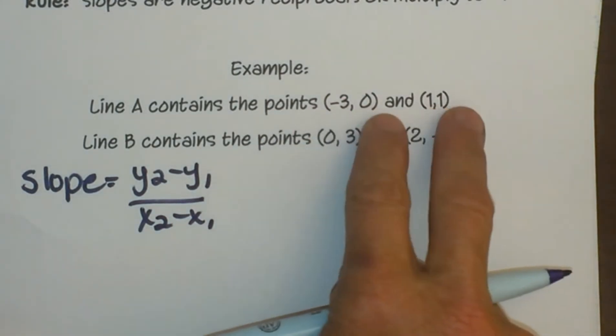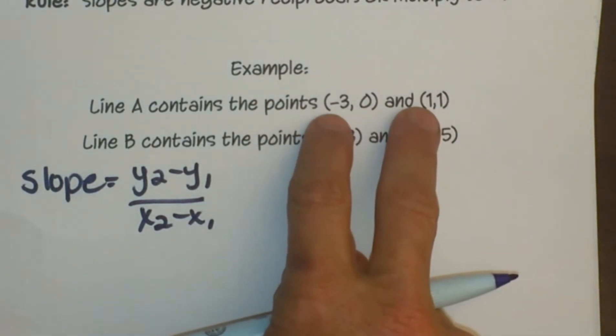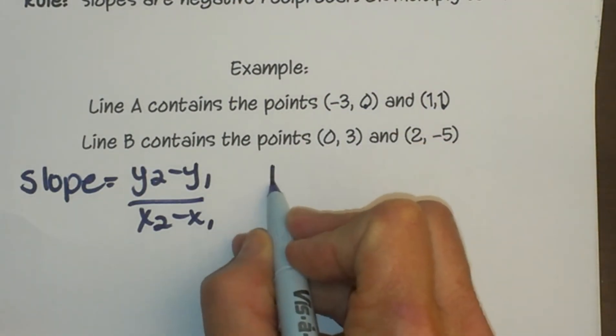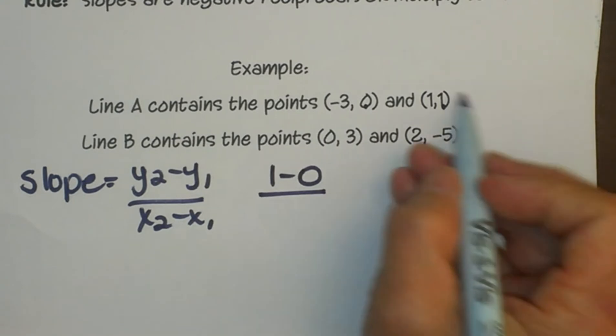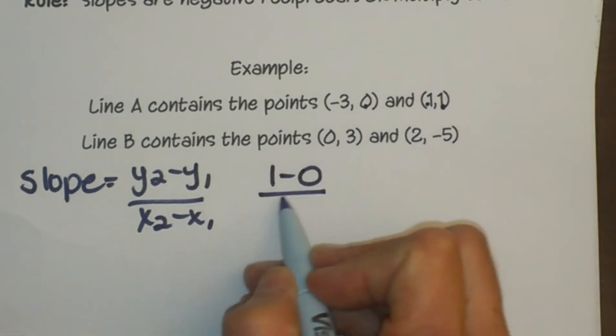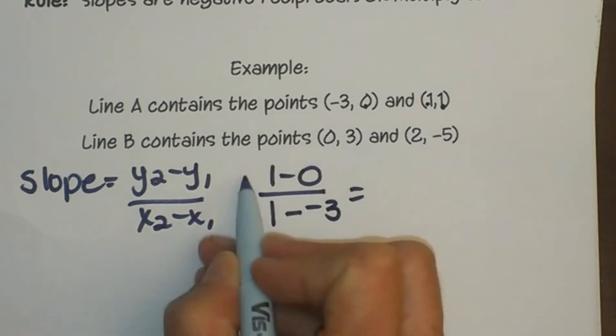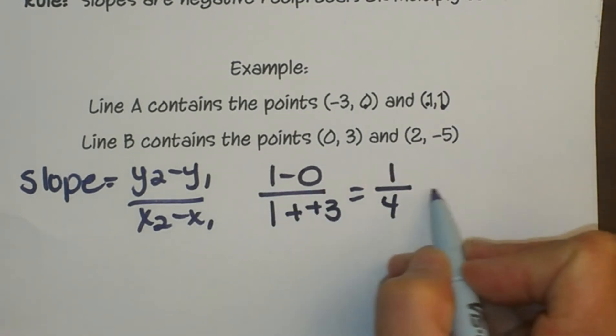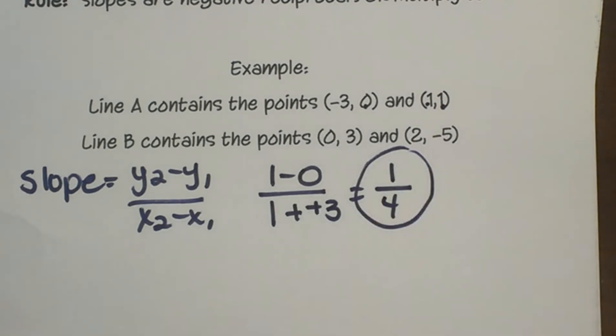So I'm going to take my two ordered pairs and I'm going to subtract the y's on top and subtract the x's on the bottom. So I'm going to take 1 minus 0 over, and if I use the 1 first I have to use this one first, 1 minus negative 3. And that gives me 1 over a positive 4, so the slope of the line is 1/4.